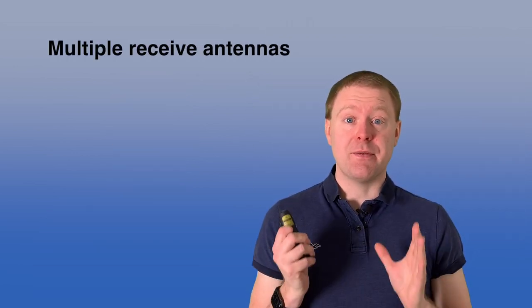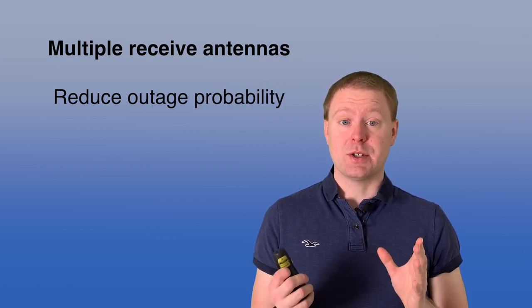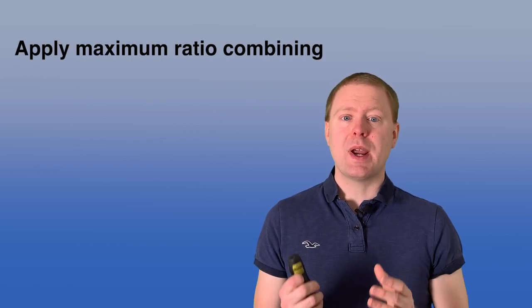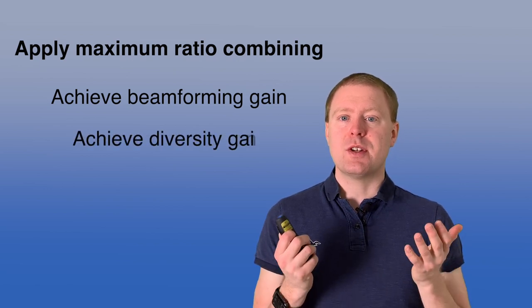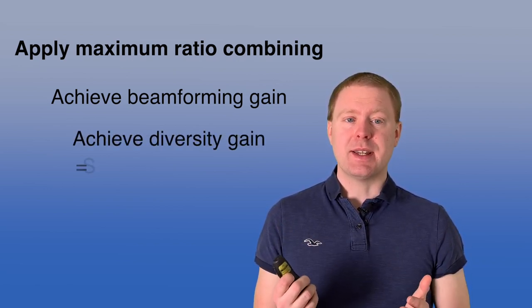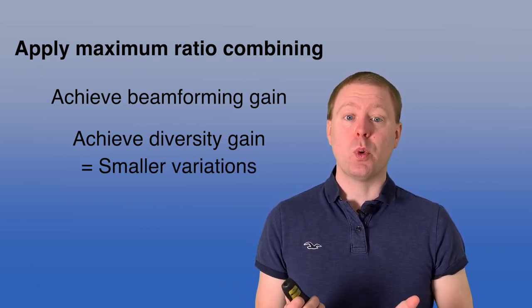Having multiple receiver antennas is a very effective way of reducing the outage probability in the communication system. So the receiver knows the channel, so it can apply maximum ratio combining. In that way, it achieves the beamforming gain, as we had talked about before, but it also achieves something called a diversity gain. And that means that the variations of the channel around its mean become smaller and smaller.